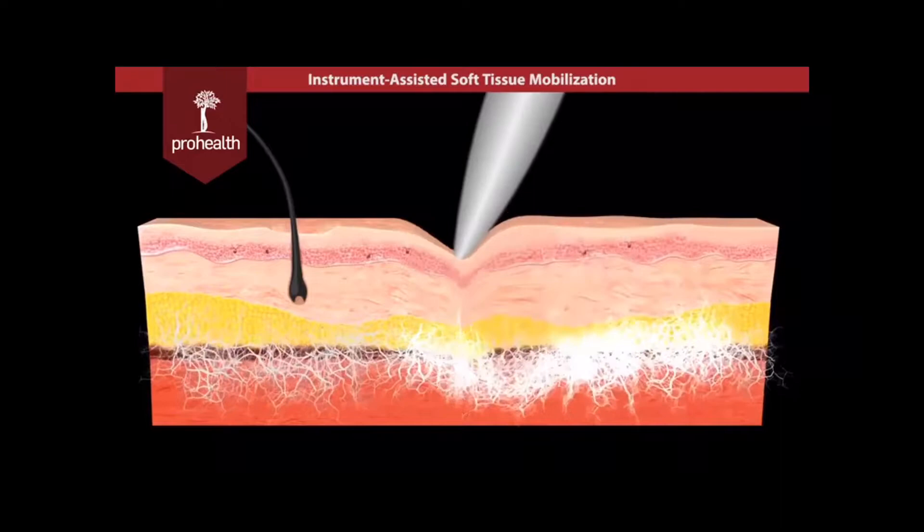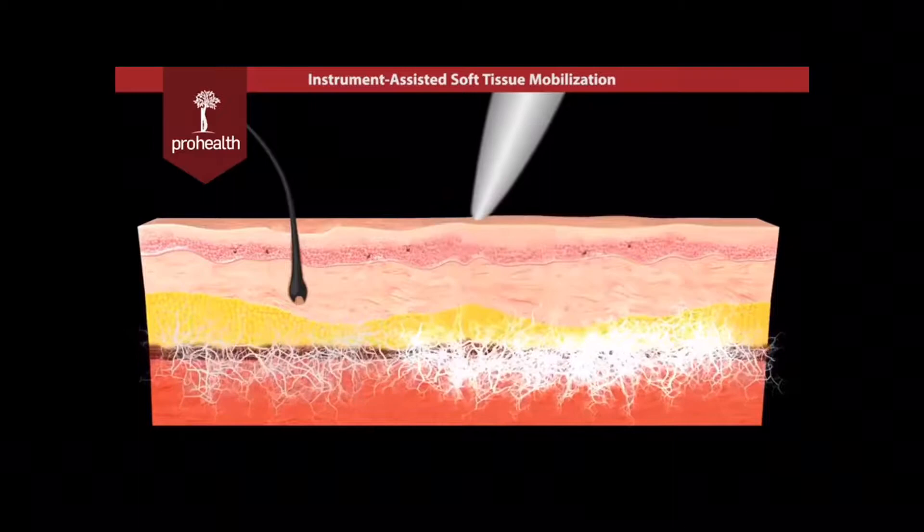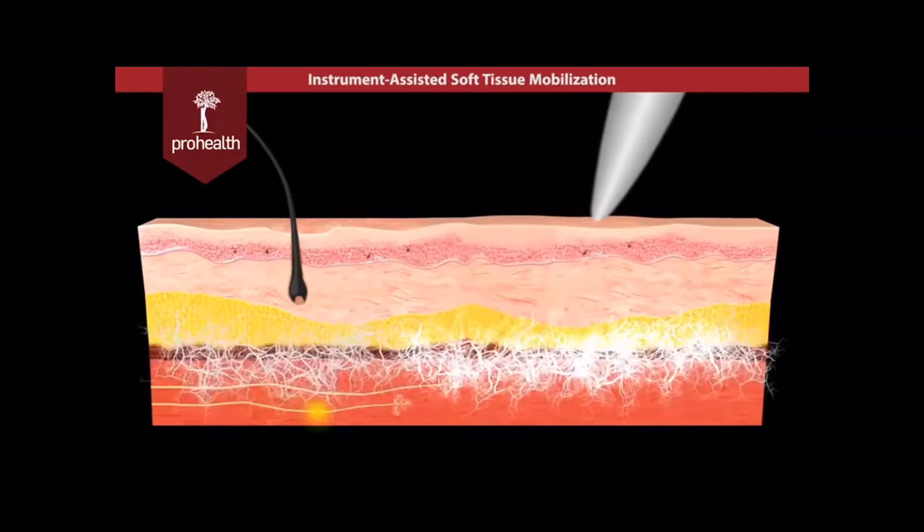Instrument assisted soft tissue mobilization, or IASTM, can help loosen or release fascial adhesions through the use of special instruments and techniques. The beveled edges are able to specifically pull, stretch and release fascial tissues.